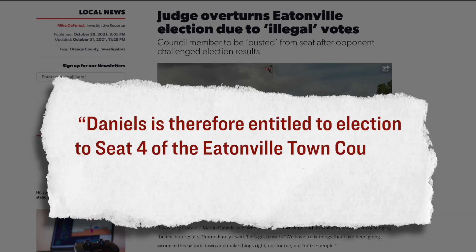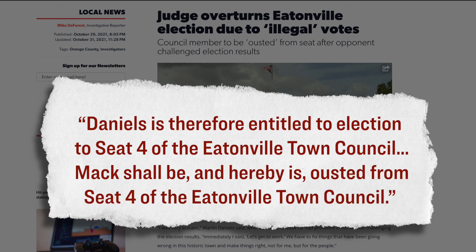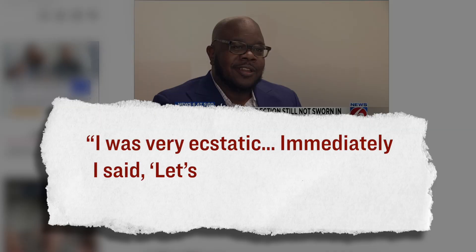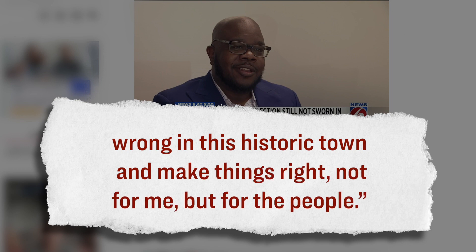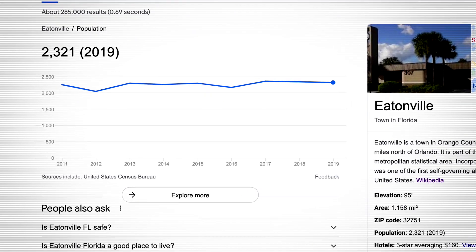And therefore, by excluding Mr. Sheketoff's vote, as well as the vote that was allegedly cast under the name of Bobby Taylor, well, that meant that Mr. Daniels ultimately received one more vote than Mr. Mack, leading the judge to write this in his court order. Daniels is therefore entitled to election to seat four of Eatonville town council. Mack shall be, and hereby is, ousted from seat four of the Eatonville town council. And as you can imagine, Mr. Marlon Daniels was thrilled with the judge's decision. Here's specifically what he said in a statement. I was very ecstatic. Immediately, I said, let's get to work. We have to fix things that have been going wrong in this historic town and make things right. Not for me, but for the people. And so that's how the 2020 town council election over in Eatonville, Florida was overturned. And just for your reference, by the way, Eatonville has a population of about 2,300 residents. And it's also worth noting that two days after this ruling, Mr. Mack filed a motion asking for a new trial. So we'll have to ultimately see whether that will go through and whether it will change anything. Regardless though, if you'd like to read the details of this case in full, I'll throw several links into the description box below this video for you to check out. And all I'll ask in return is that you vote with your finger and smash that like button for the YouTube algorithm.